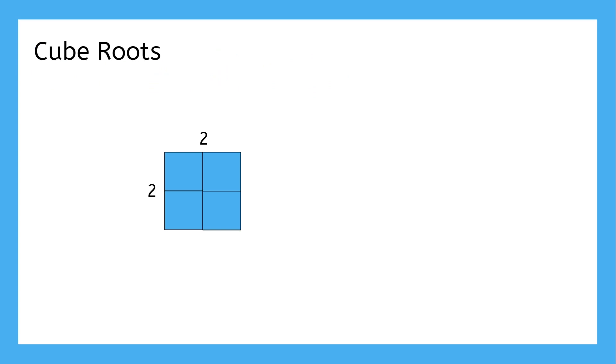This model shows a 2 by 2 square which creates 4 sections. The model helps us to understand that 2 squared is 4 and the square root of 4 is 2.